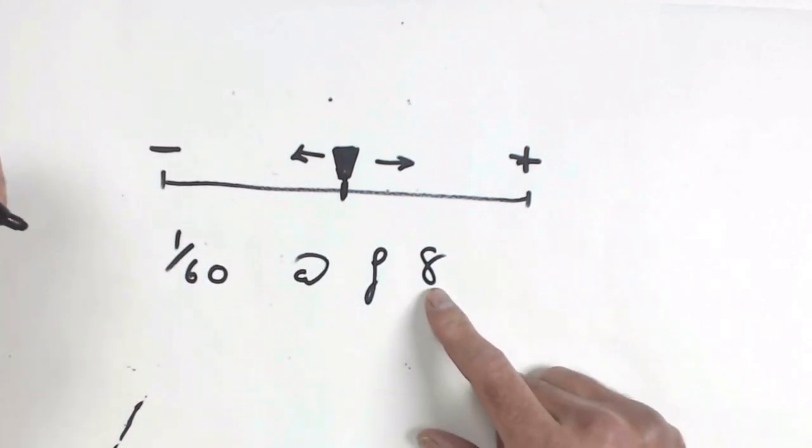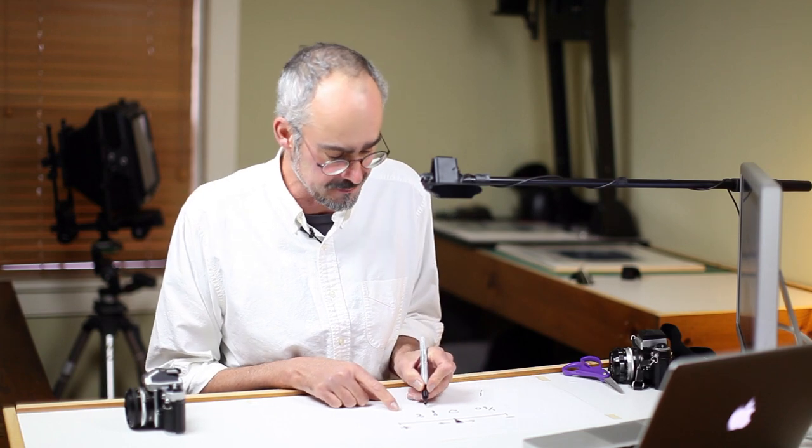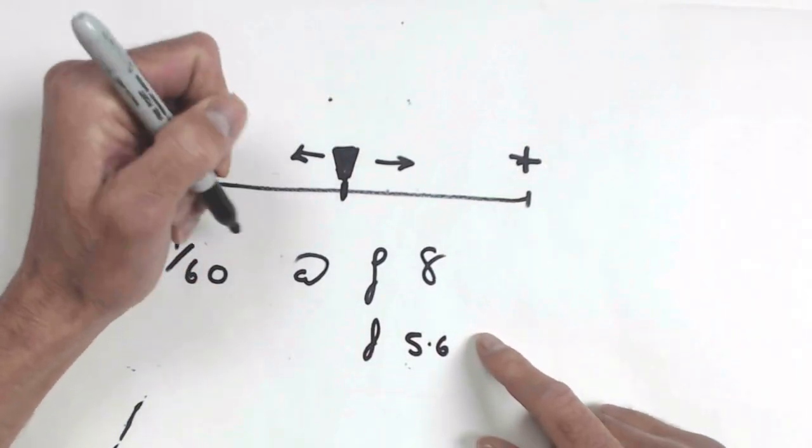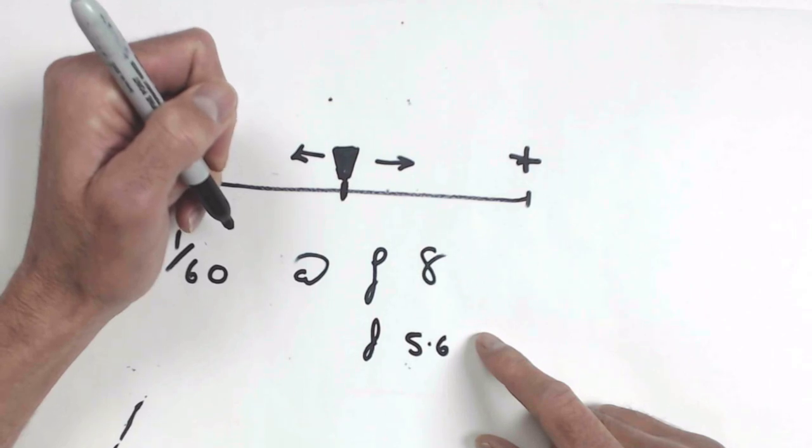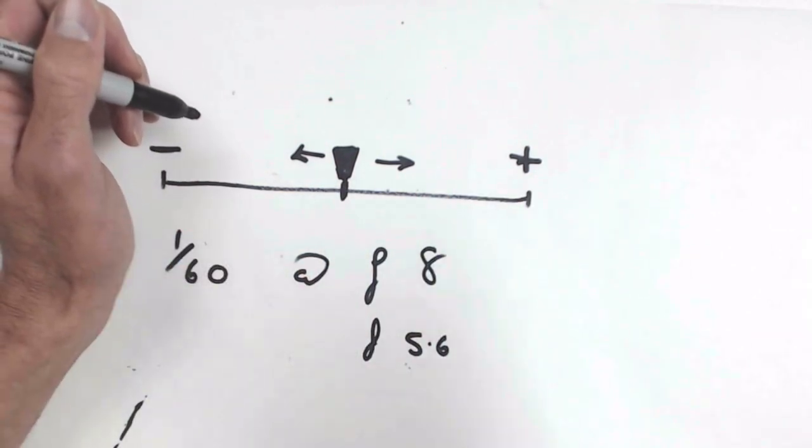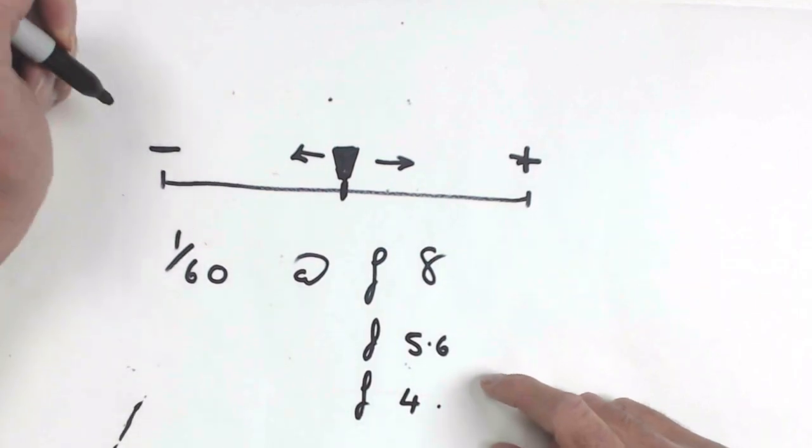What I want you to do then is just change the aperture. Change the aperture to one aperture wider, f5.6, and see where the slider goes. Should it go overexposed or underexposed? Have a look. Then change it to f4 and see where the slider goes.